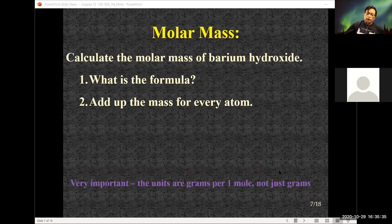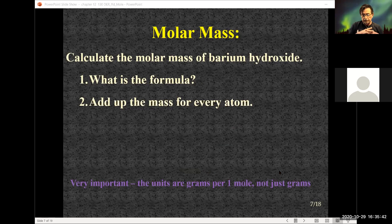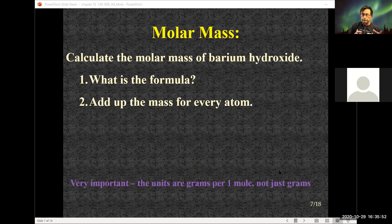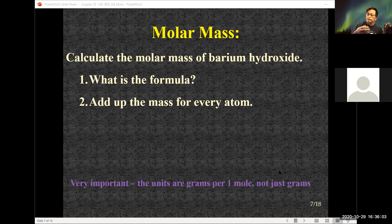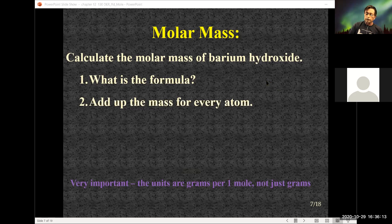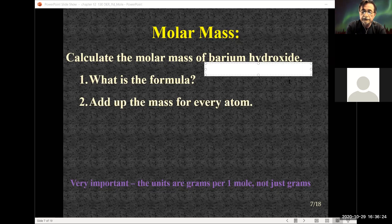Now — molar mass. You might hear the terms molar mass and atomic weight interchanged at times. Molar mass is nothing more than adding up the atomic weights of all the elements in a chemical compound. We need to write the correct formula. For example, they give you the name barium hydroxide and you need to write the formula.